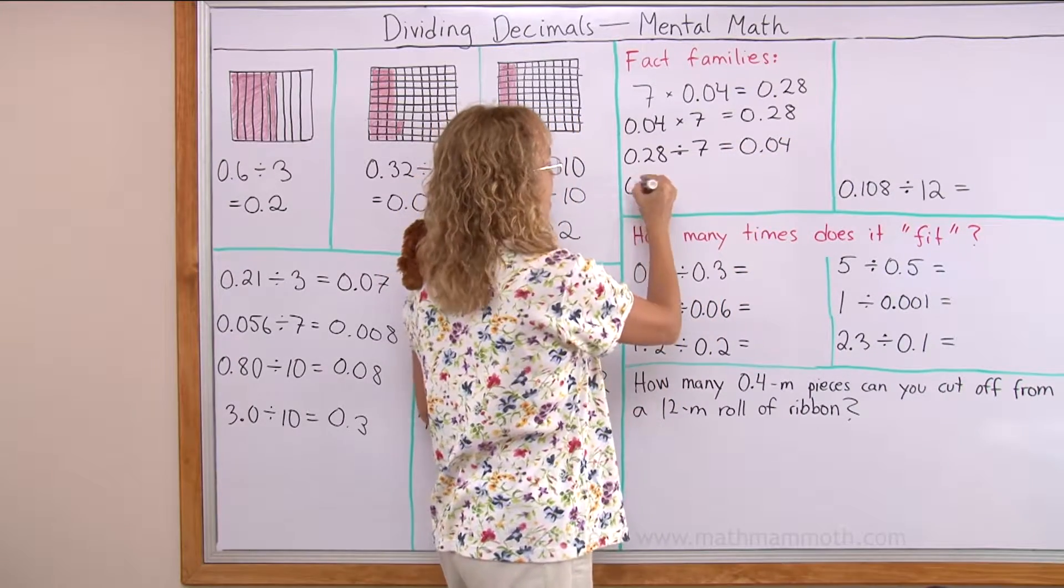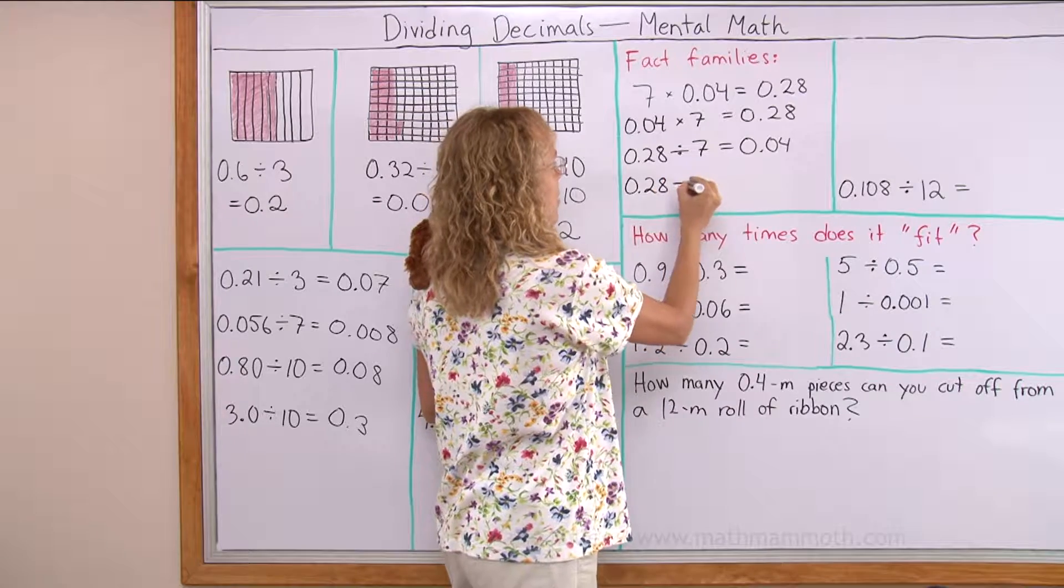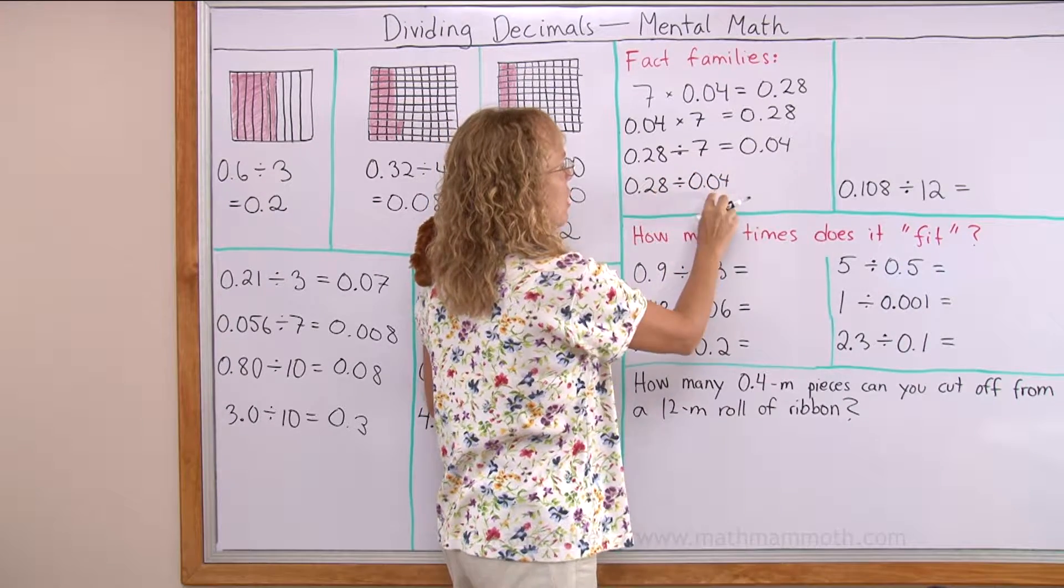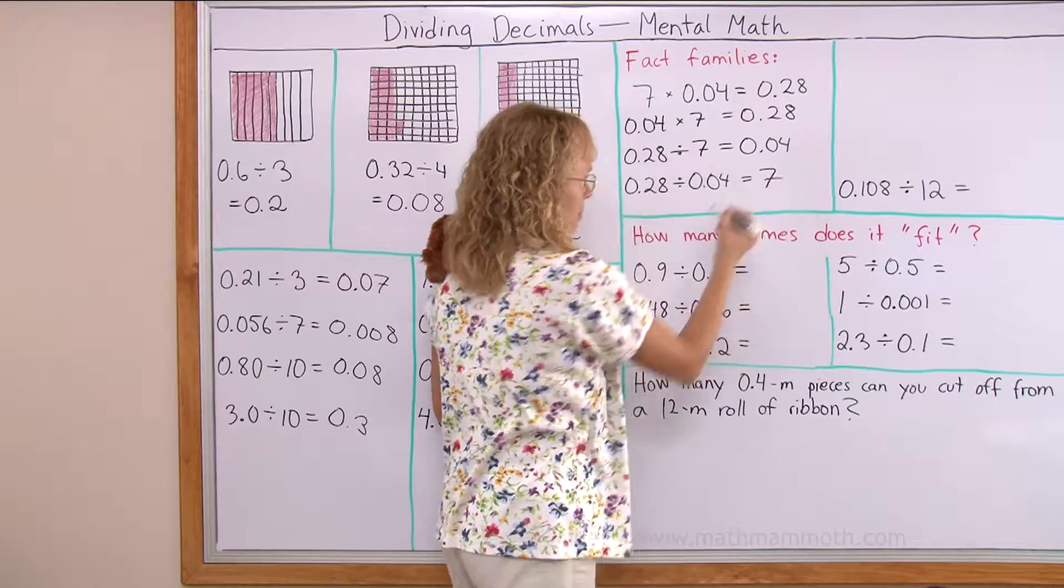And then there's one more division. It starts with the same, but divided by 4 hundredths and equals 7.